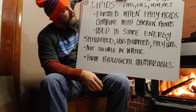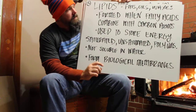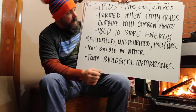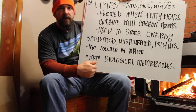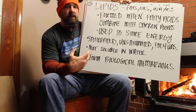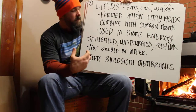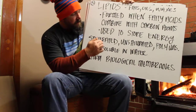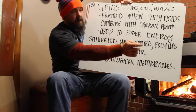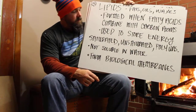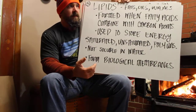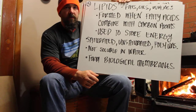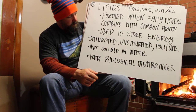Lipids are the second one. These are your fats, oils, and waxes. They are formed of fatty acids combined with carbon atoms, used to store energy. So you take in a bunch of carbohydrates and you don't use them all up, and these are converted into lipids to store. There are three kinds: saturated, unsaturated, and polyunsaturated. These are even the same things you use to cook with in the kitchen, like corn oil and olive oil and all that stuff.